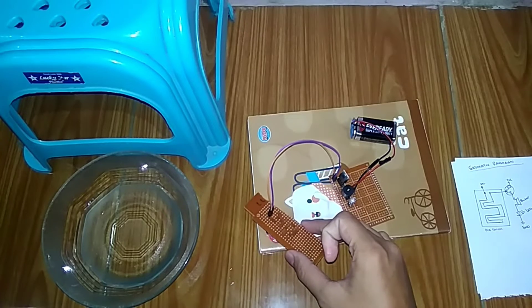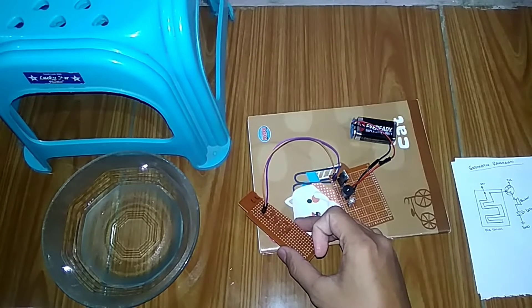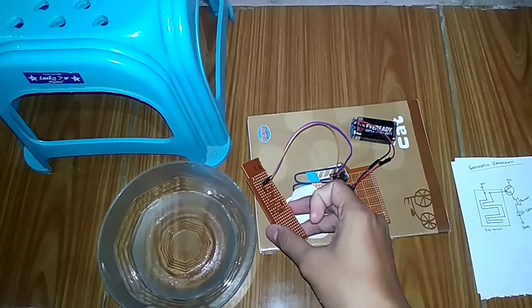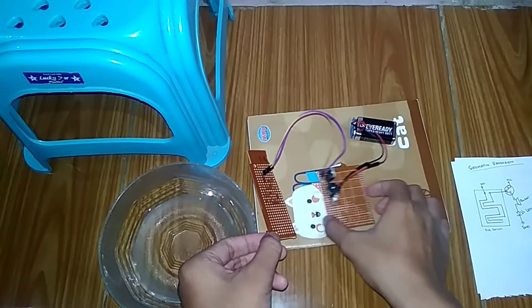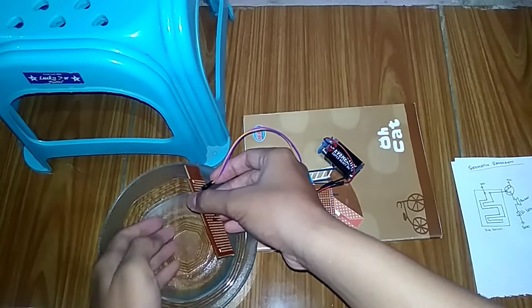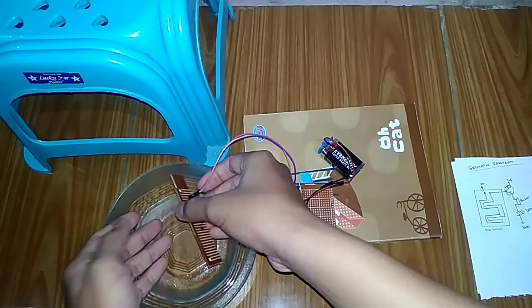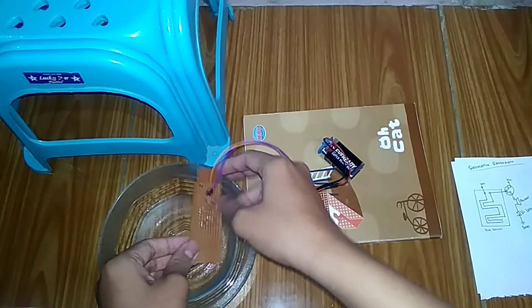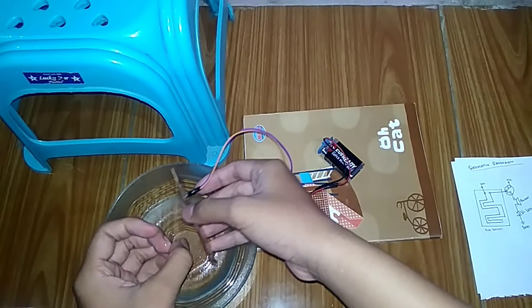This is the working principle of a rain detection device. Then if we dip the sensor circuit itself, will it work? Yes it will. For example, if we wet it or splash it with water.